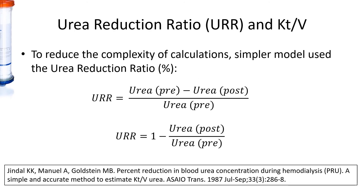To reduce the complexity of calculation of KT/V, we use the urea reduction ratio. This is calculated by the difference in the pre- and post-dialysis urea divided by the pre-dialysis urea. And sometimes the formula is expressed in this manner.